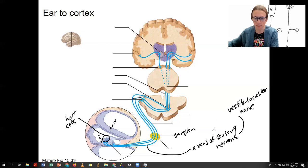So this is still considered the axons here, still the cranial nerve, vestibular cochlear nerve that carries the information to the medulla.